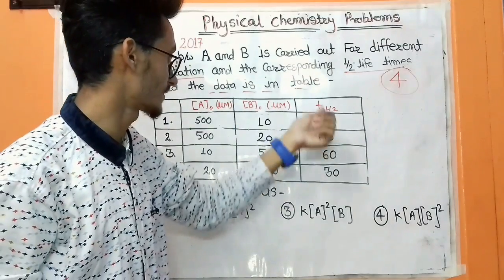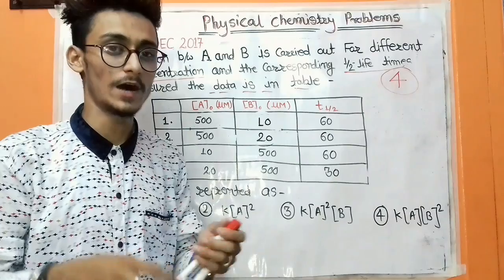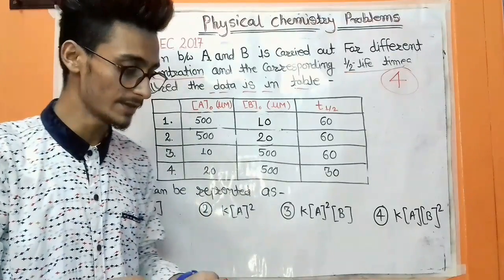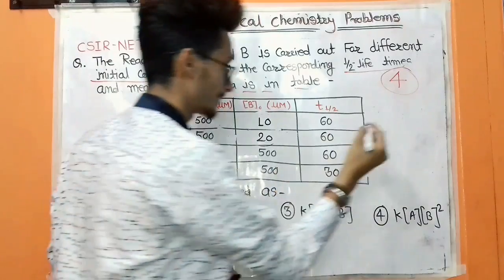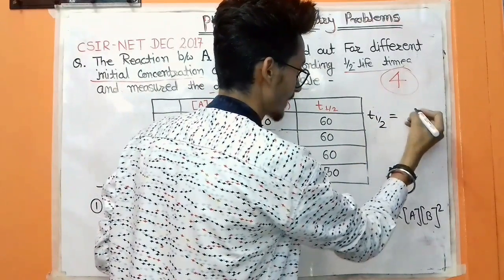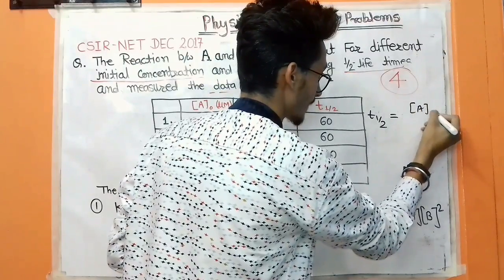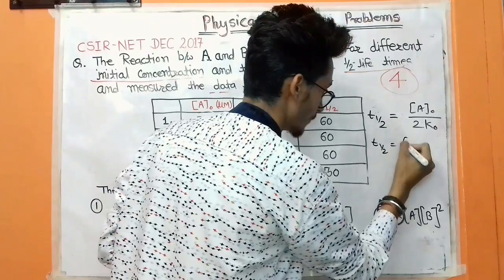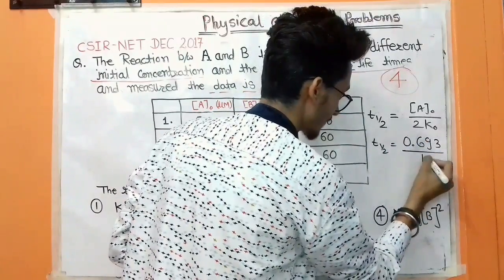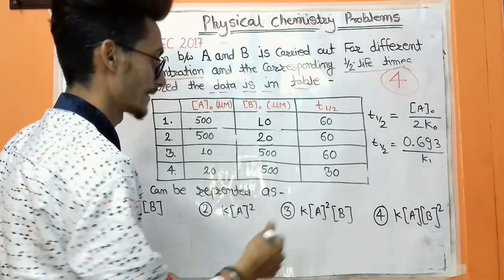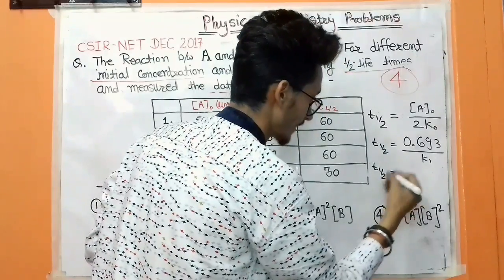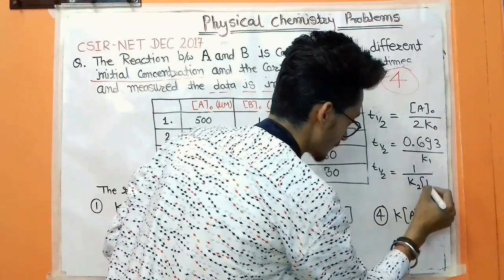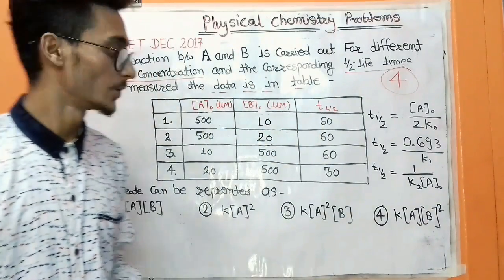We look at the concentrations and half-lives in the table. We know the half-life formulas for different orders: for zero order, half-life = [A]₀ / 2k₀; for first order, half-life = 0.693 / k₁; and for second order, half-life = 1 / (k₂[A]₀).